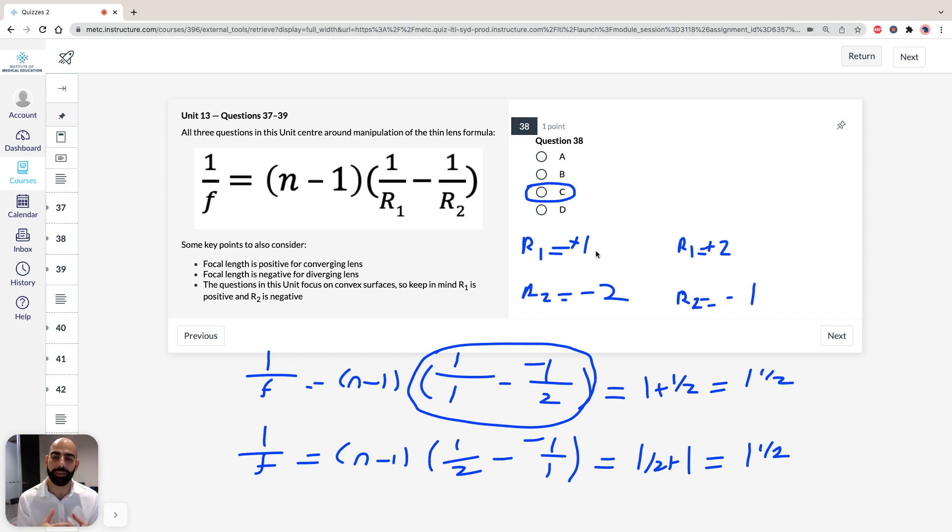So for a bi-convex lens, it doesn't matter on which side the radius, or if it's a different radii. As long as you keep the signs consistent, you're consistent with the signage, one's plus, one's negative, it's going to be the same answer if you flip them around.